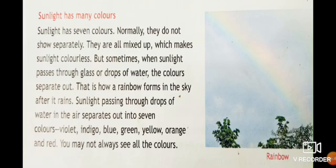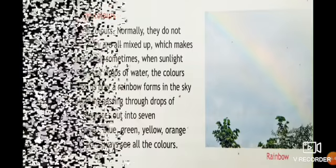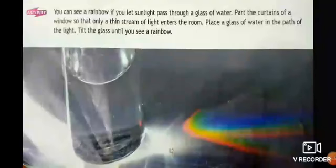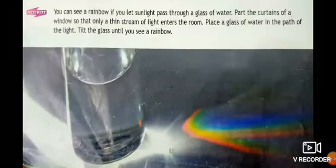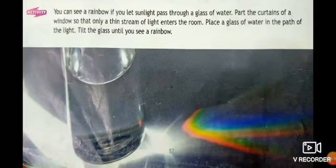How does the rainbow form? Sunlight passing through drops of water in the air separates into seven colors. There is an activity in the book on page number 82.